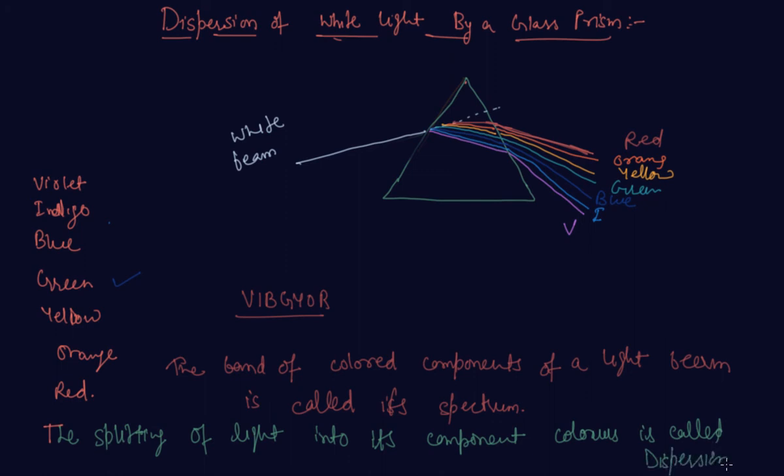So this is what we are discussing. Dispersion means splitting of white light by a glass prism. When white light splits into seven colors, it is called dispersion of white light by a glass prism.